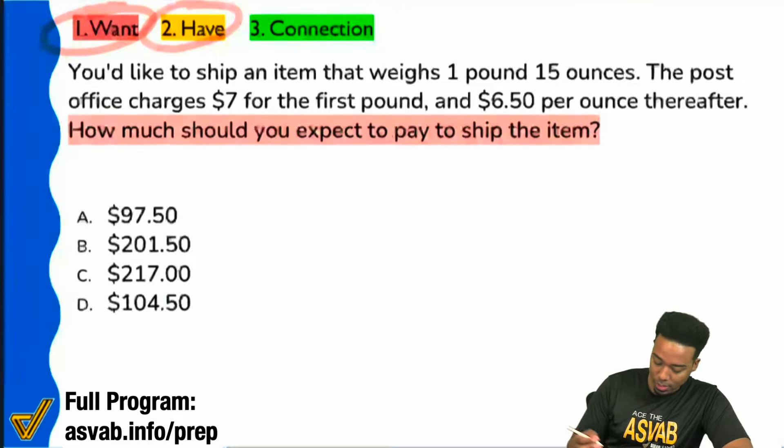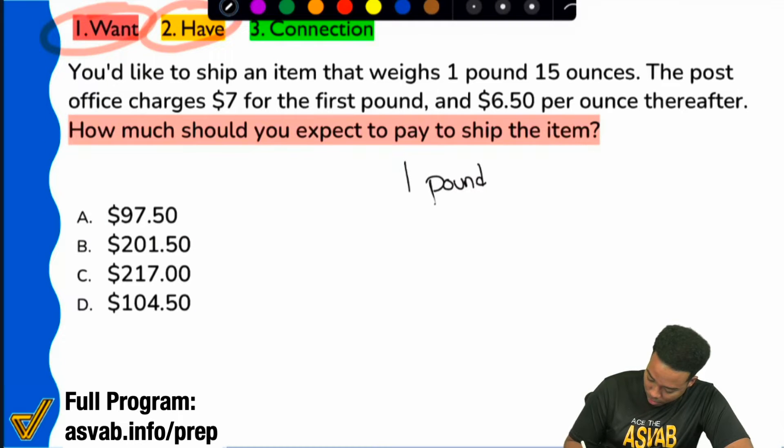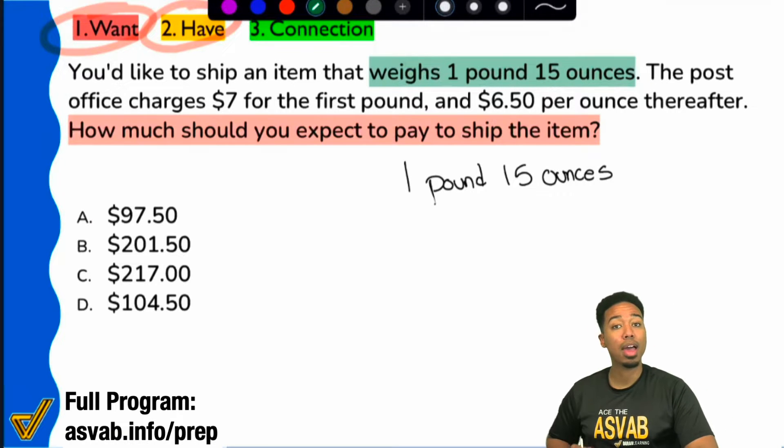There's a cost to this. Great. So, now that I know there's a cost, then I'm going to write down the one pound, 15 ounces. Let me go ahead and help myself out real quick. Let me fix this up. Perfect. One pound, 15 ounces.